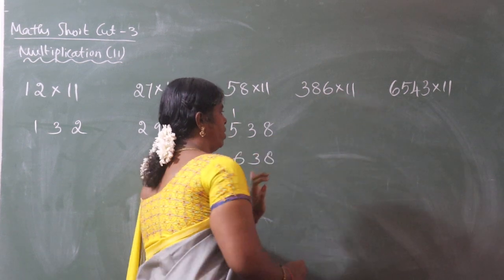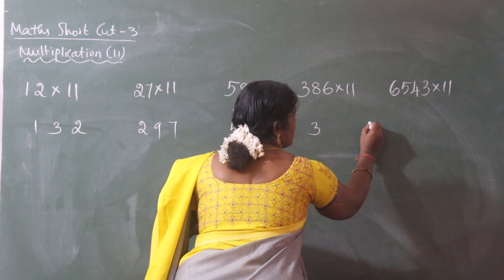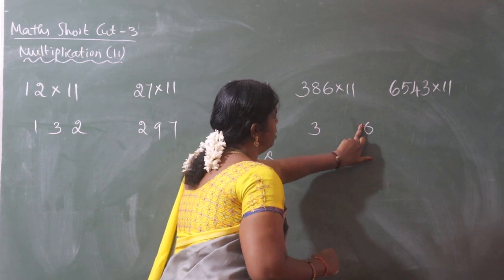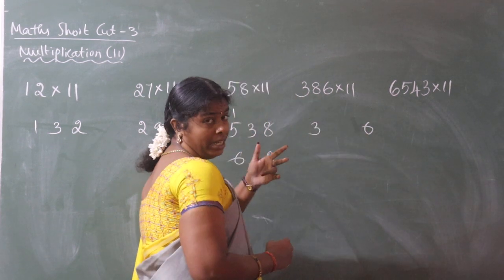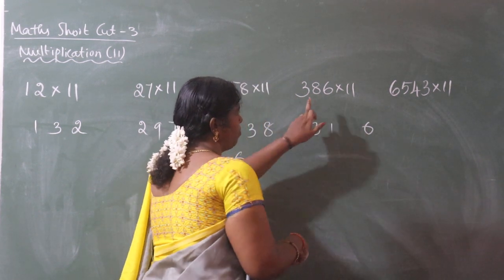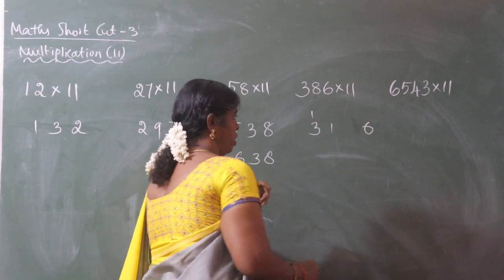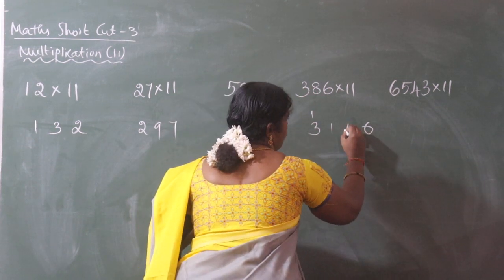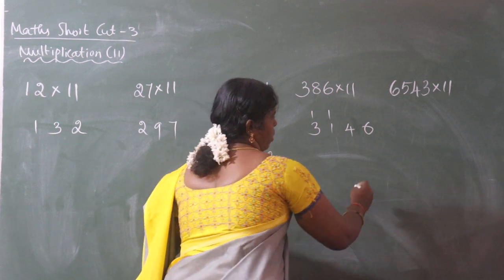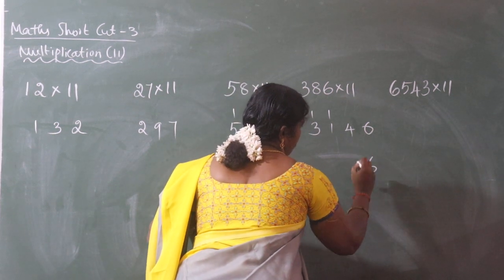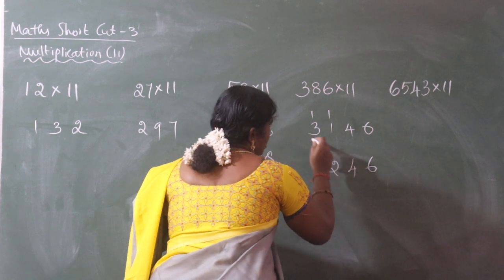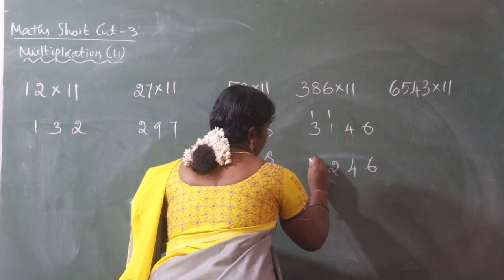386 into 11. Here is 3, here is 6. 3 plus 8 is 11 — write 1 and carry 1. 8 plus 6 is 14 — write 4 and carry 1. Now we get 6 in the last position, 4, then 1 plus 1 is 2, then 3 plus 1 is 4.